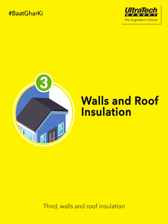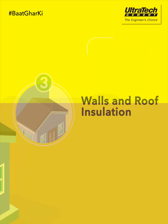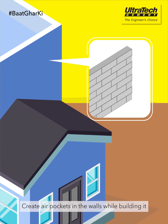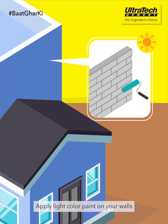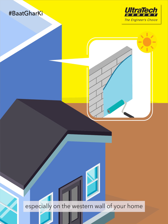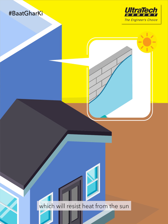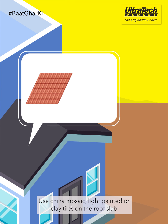Third, walls and roof insulation. Create air pockets in the walls while building it, or use AAC blocks as a building material which will provide insulation from harsh sunlight. Apply light colored paint on your walls, especially on the western wall of your home, which will resist the heat from the sun. Use china mosaic, light painted or clay tiles on the roof slab.